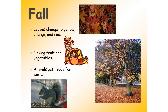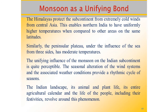Monsoon as a unifying bond. The Himalayas protect our subcontinent from extremely cold winds from Central Asia. This enables North India to have uniformly high temperatures when compared to other areas on the same latitude. Similarly, the peninsular plateau, under the influence of the sea from three sides, has moderate temperatures. Despite such moderating influences, there are great variations in temperature conditions.